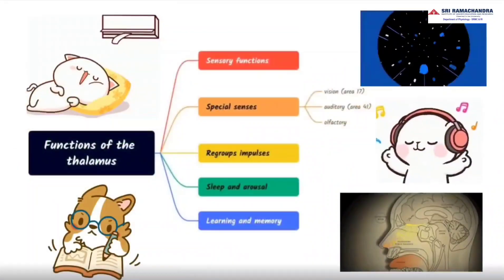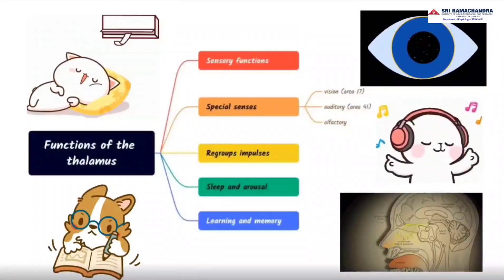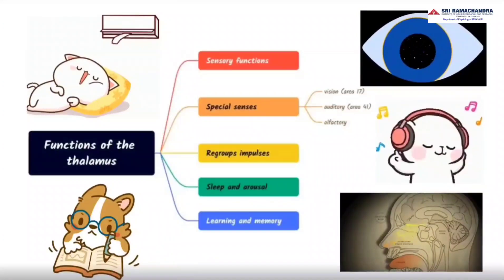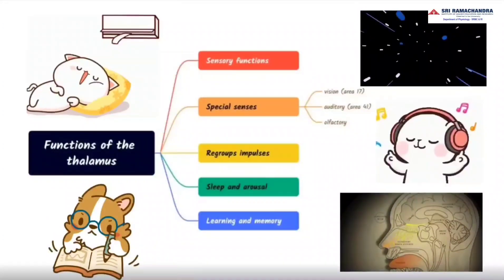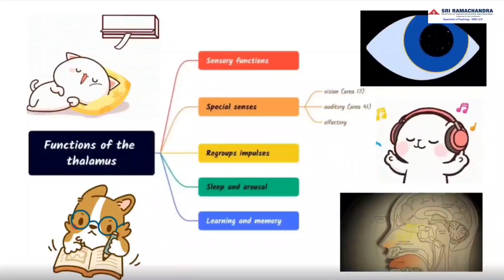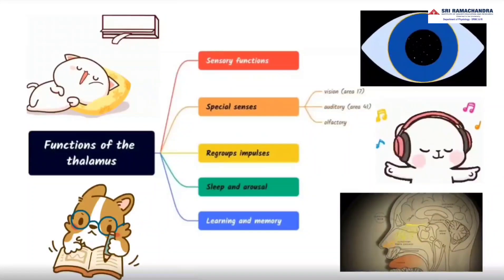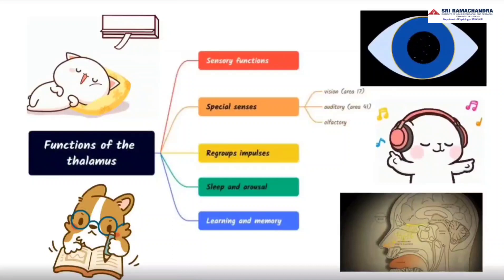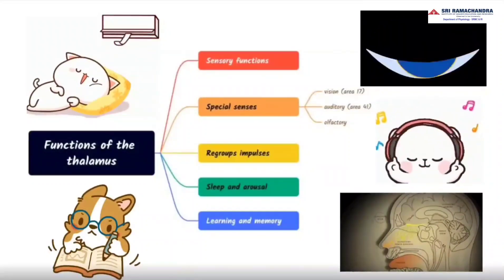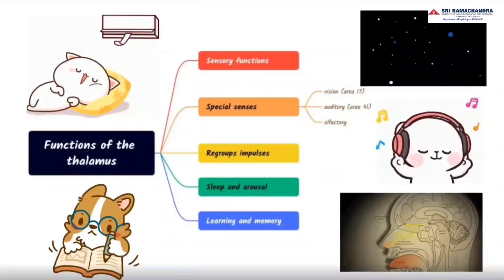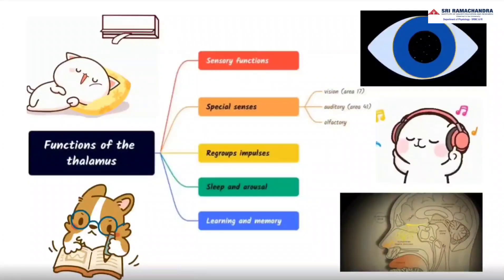Functions of the thalamus include sensory functions and special senses — vision which relays in area 17 of the cortex, auditory which relays in area 41 of the cortex, and olfactory. The thalamus also regroups impulses, helps in sleep and arousal, and learning and memory.